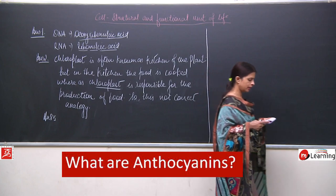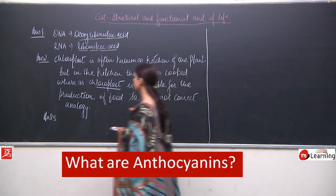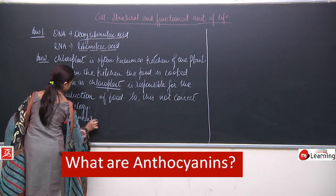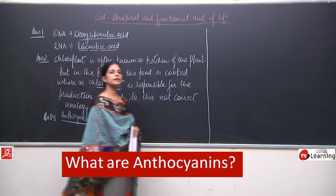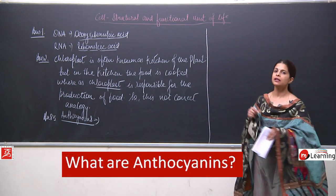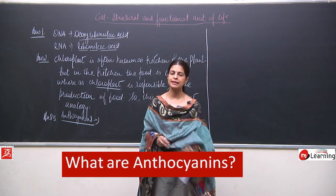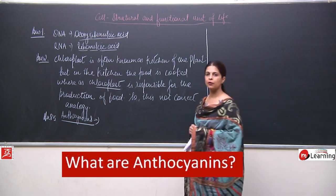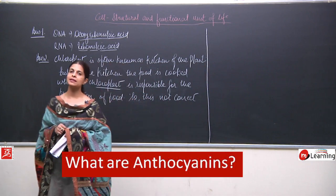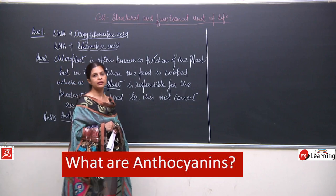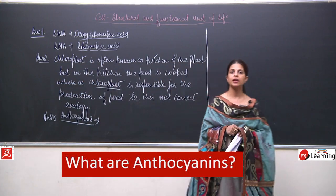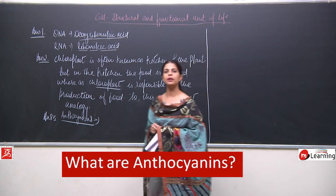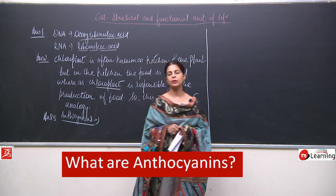Coming to the next one: What are anthocyanins? There are certain pigments in the plant. We are talking about plastids — plastids are present only in plants. Plastids are of various types; chloroplast is one of them. The other type, chromoplast, is responsible for giving colours to fruits and vegetables. But there are certain colours — blue, purple, violet — that are not because of the presence of chromoplast.